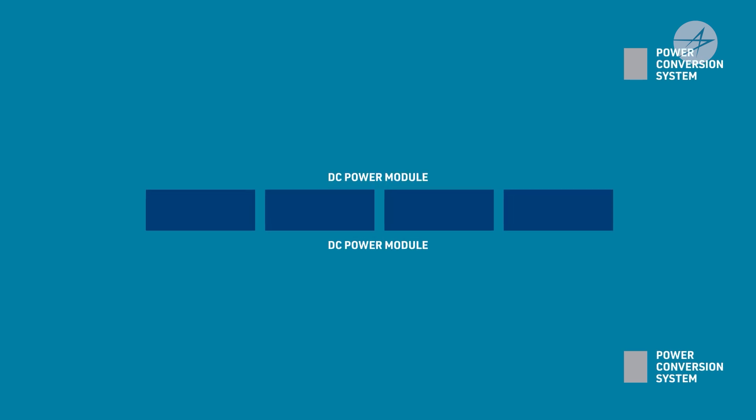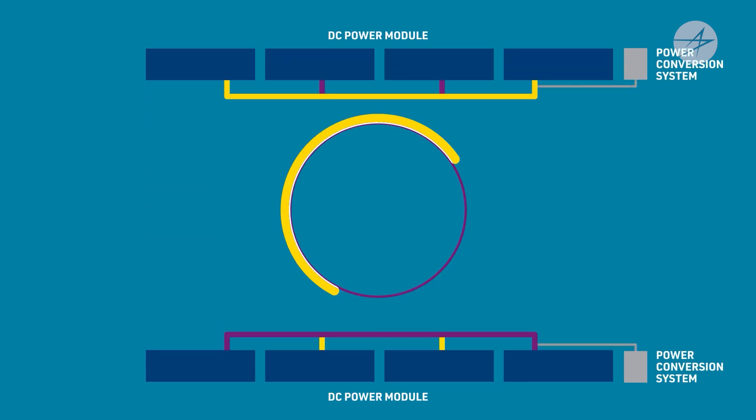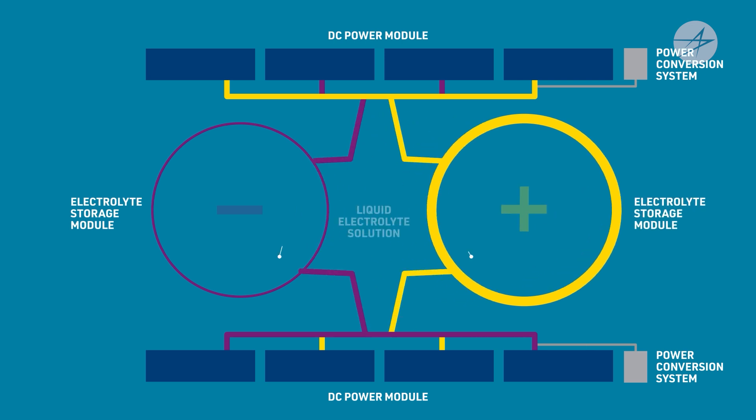GridStar Flow is comprised of four main parts: the power conversion system, the DC power modules, the electrolyte storage module, and the liquid electrolyte solution.